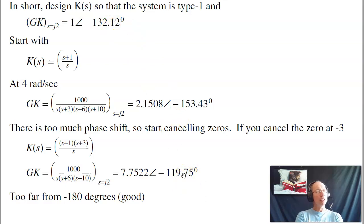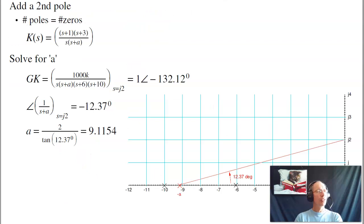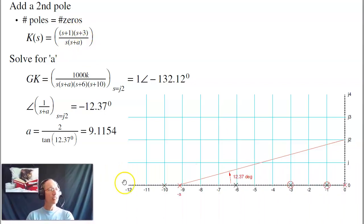Now analyze g times k at 2 radians per second, I'm at minus 119 degrees. I've got too much phase margin. Too much phase margin is good. What I'm going to do is I'm going to then add another pole to eat away at the phase margin to push the phase back to minus 132 degrees. So at that point I'm done. I've added enough zeros.